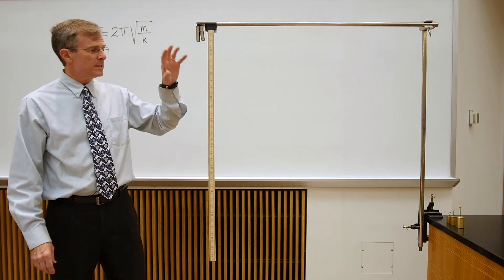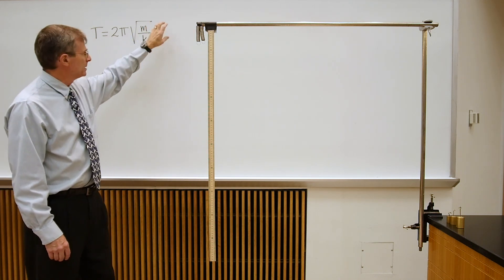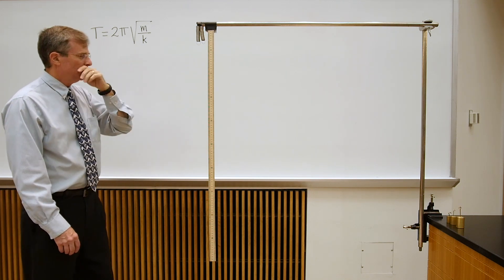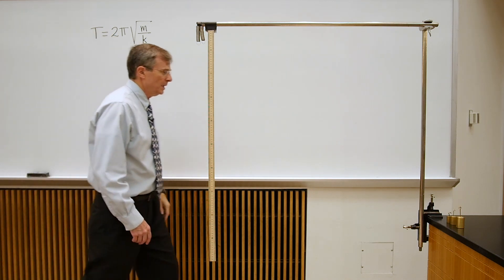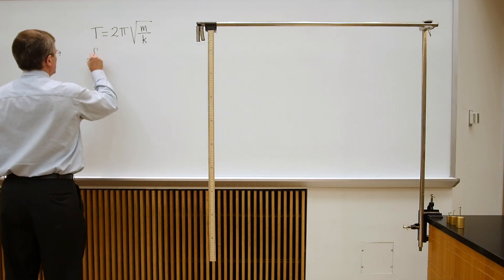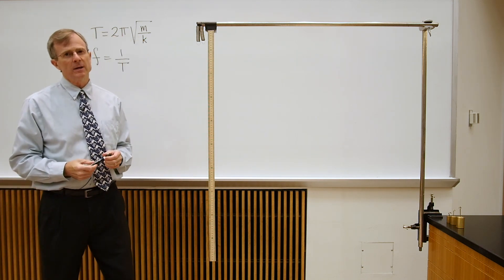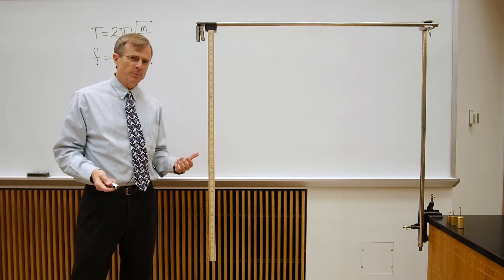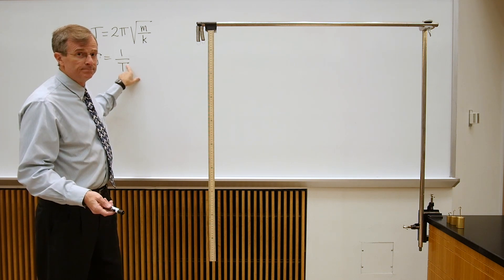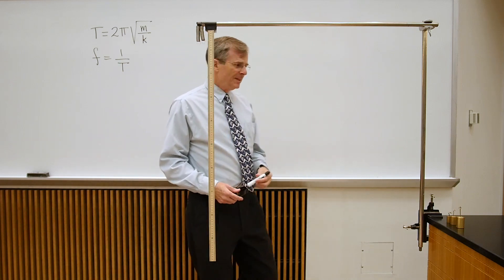So the mass-spring system's period depends on the mass and the spring constant, but not the amplitude of the motion. And the frequency — you can always get the frequency from the period as 1 over T. So if you prefer thinking in terms of frequencies: the longer the period, the shorter the frequency, and vice versa.